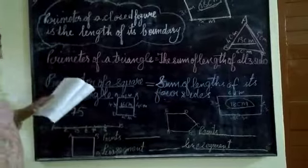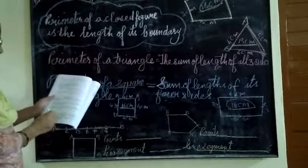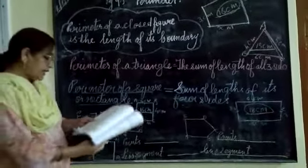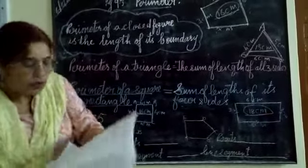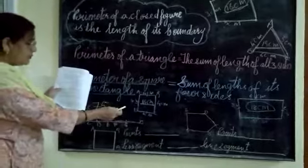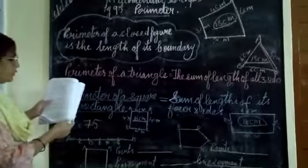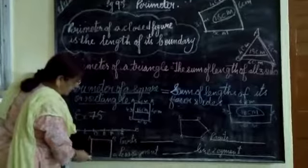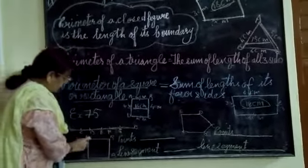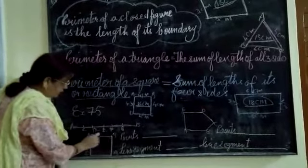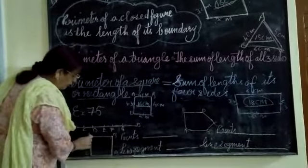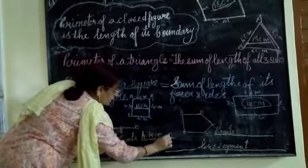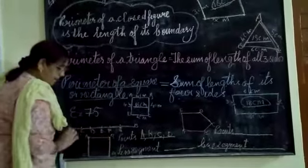In question 2, in the figures given below, name the points and the line segments. Here, figures are drawn in your book. I have drawn one with points A, B, C, D. How many points are here? There are 4 points: A, B, C, D.